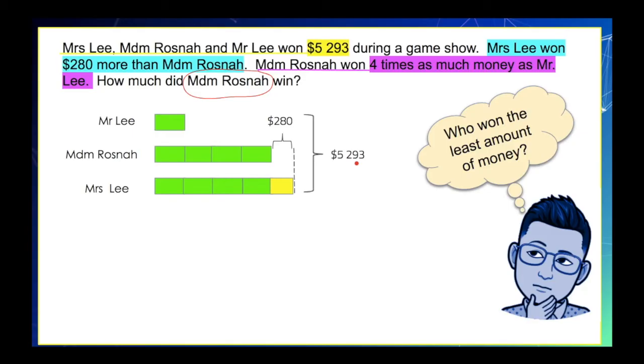And the last step would be finding out the question, how much did Madam Rosnah win. And in our model, we can label it with a question mark like this. And now we are ready to solve.